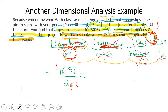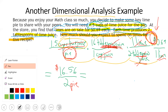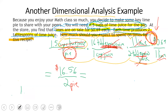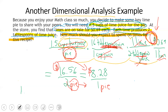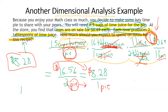Dividing 16.56 by 2 gives us 8.28. Writing it as 8.28 over 1, we carry the units through: dollars on top and pie on the bottom, giving us $8.28 per one pie. So the answer to the question — how much should you expect to spend on limes — is $8.28 for the one pie. Thank you so much for watching.